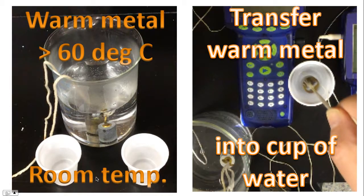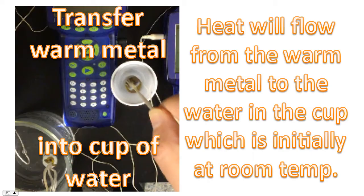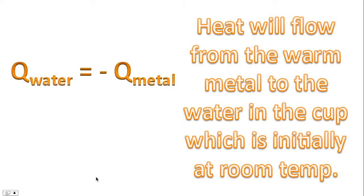Now what we'll be doing is we'll be transferring the warm metal into the cup of water. Heat will flow from the warm metal to the water in the cup, which is initially at room temperature. This equation tells a story, and the story it tells today is this: the energy gained by the water is coming from the metal.